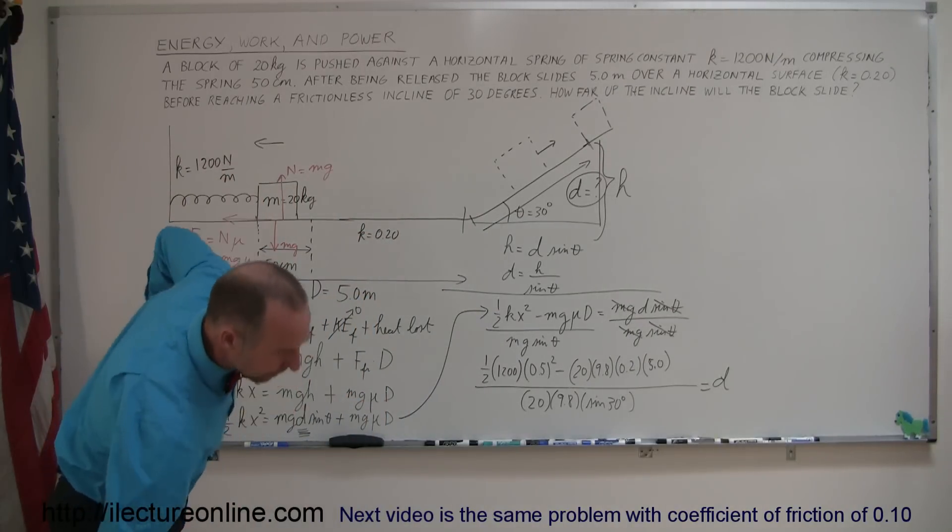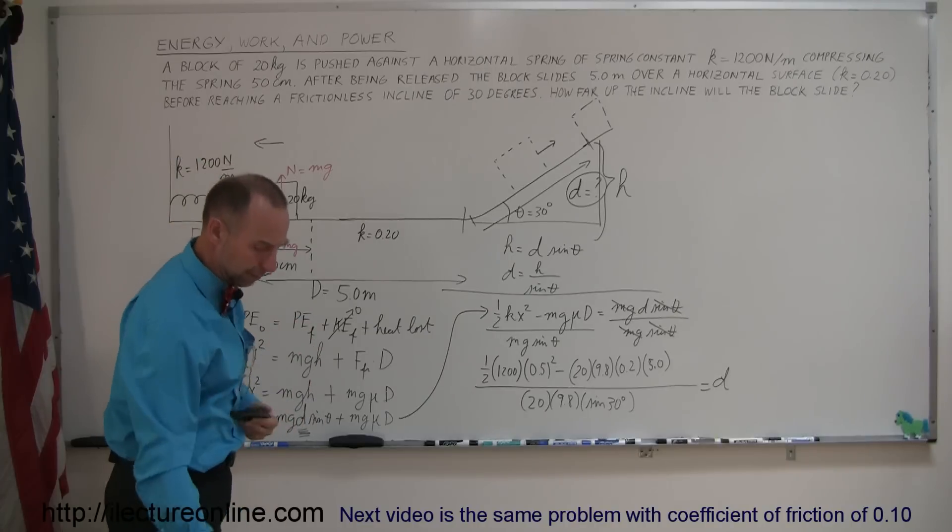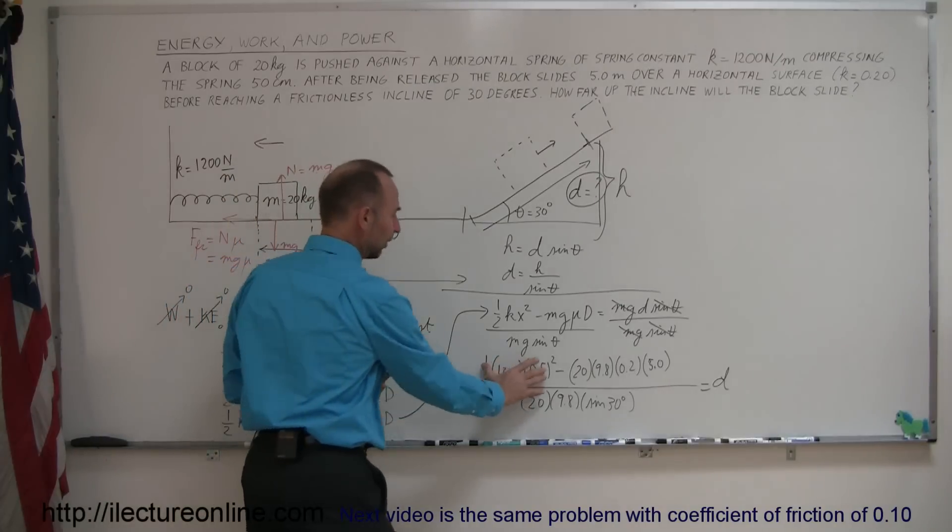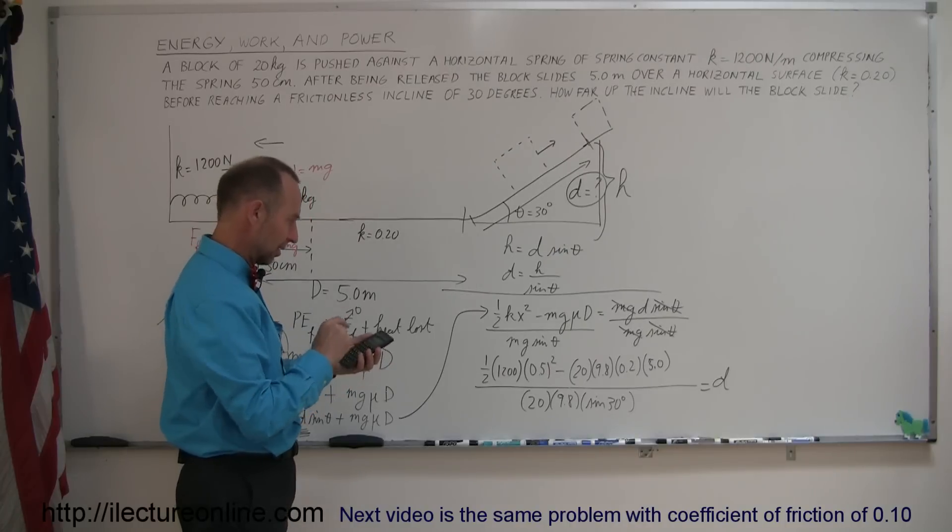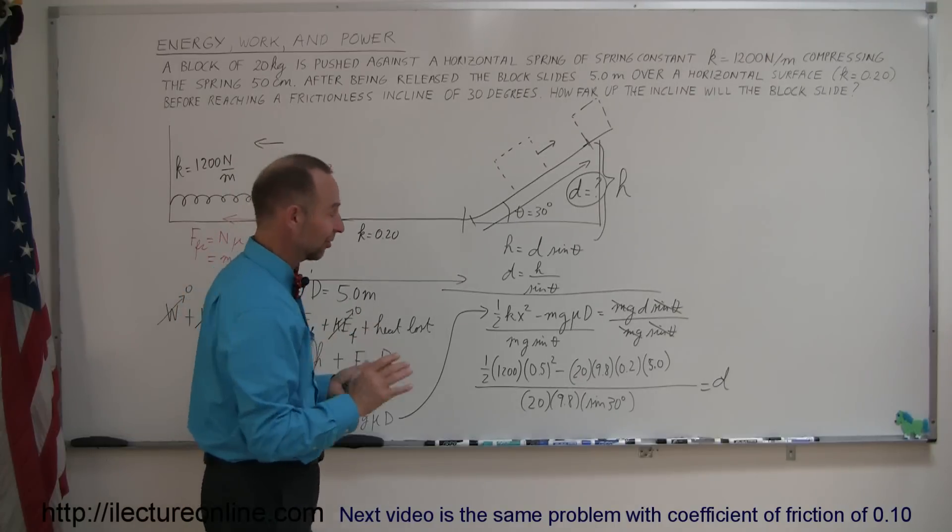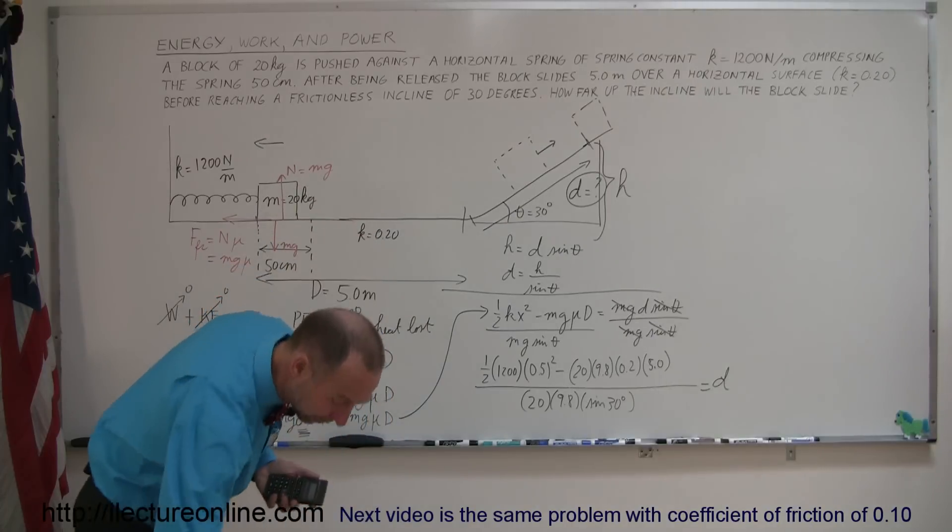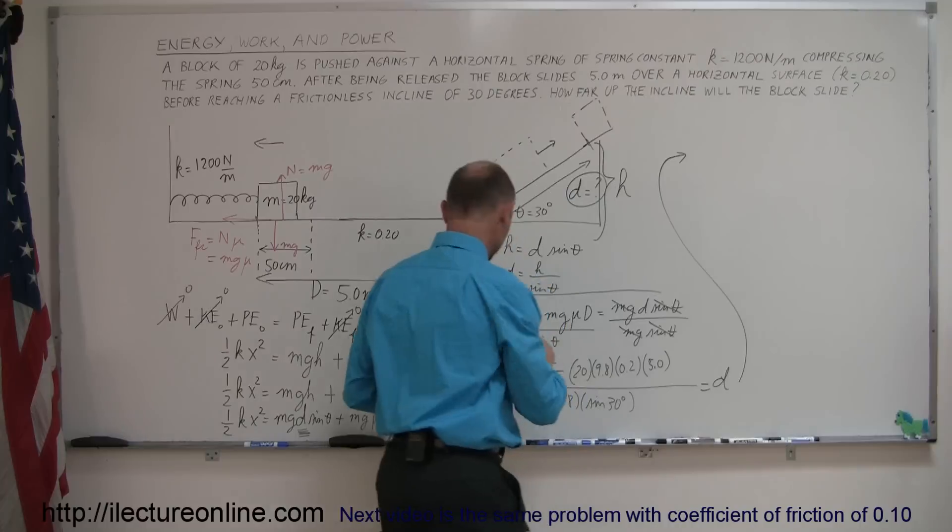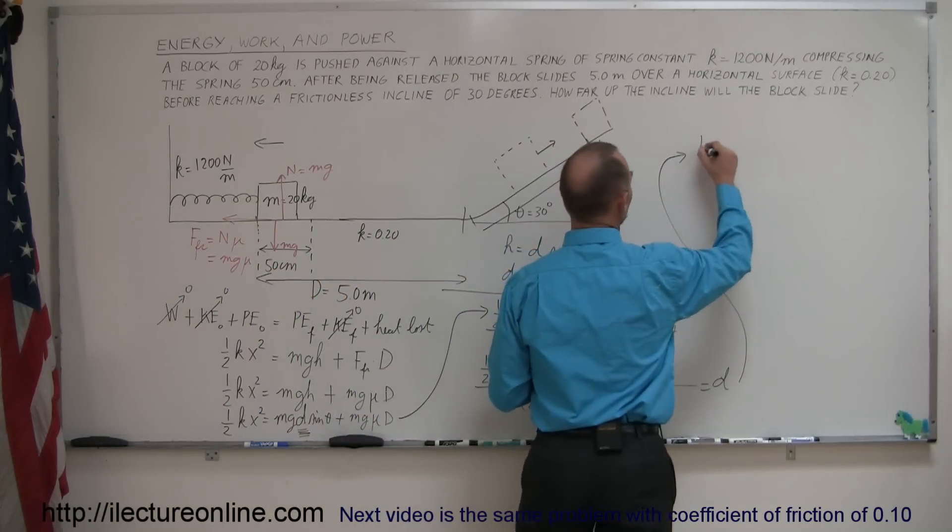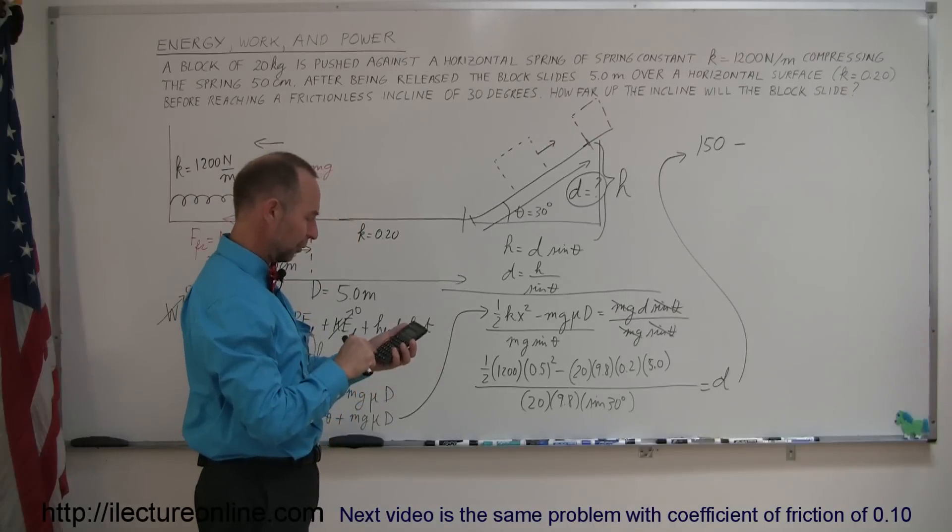Alright, now we need a calculator. So I have one handy here. And let's see what that number is. How far up the incline did our block slide? So we start with 0.5 squared, times 0.5, times 1,200. Okay, that gives 150 for this, minus what's there. So minus 20 times 9.8, times 0.2, times 5. That's 196 equals. So we're left with minus 46. Now that's interesting. Let's write that down. So coming up here, let me calculate that again. That would be 1,200 divided by 8. That was 150. So we get 150 minus that quantity right there, which was 20 times 9.8, times 0.2, times 5, which is minus 196.